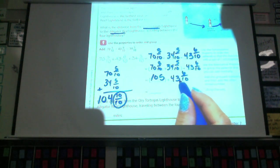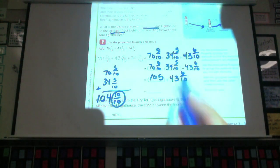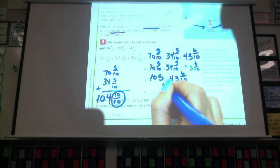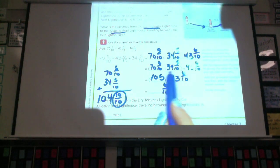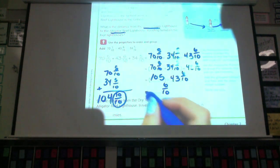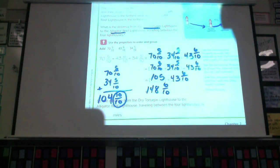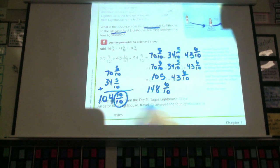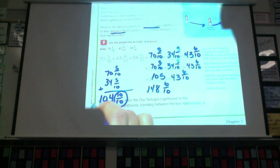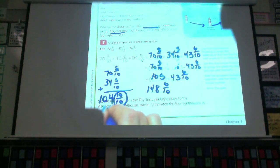Now, I'm going to add the 105 and the 43 and 6 tenths. Am I doing any more addition with fractions? No, the fraction part is done. There's nothing on this one to add. And then, I have 105 plus 43, which is 148. Okay. Make it nice and easy. So, the total is 148 and 6 tenths of a mile.